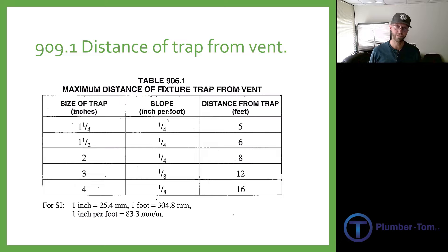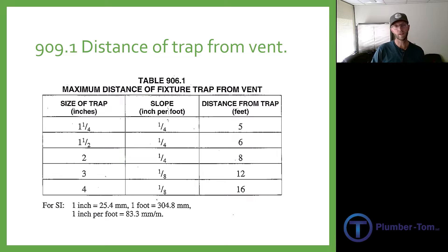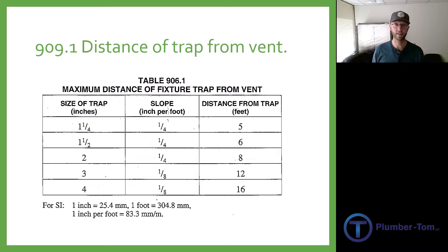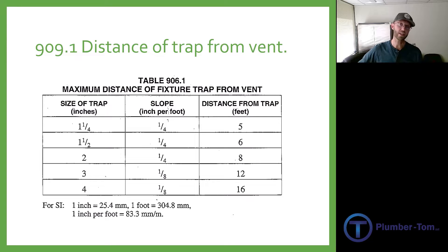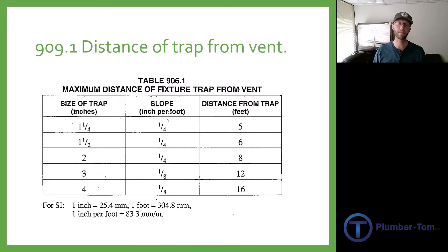Five feet for an inch and a quarter. Most common ones we'd be dealing with — you might have a one-and-a-half-inch horizontal branch coming over for a lav: six feet, that's your limit for how far you can go. What about reaching out to get a shower, coming through the floor joists with a two-inch pipe? Eight feet. Lock these in memory — it's going to be useful.